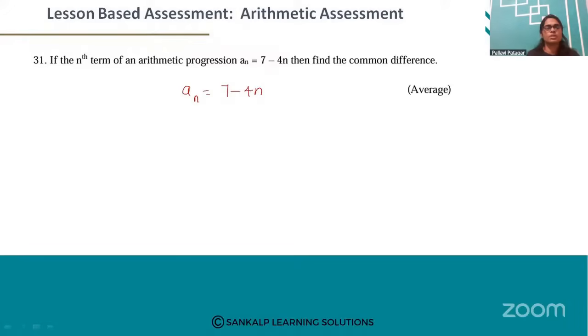So here if n is equal to 1, a1 is equal to 7 minus 4 into 1. This is equal to 7 minus 4. The first term is equal to 3.